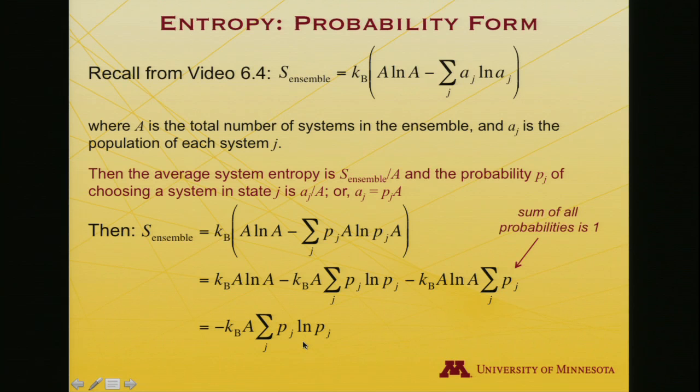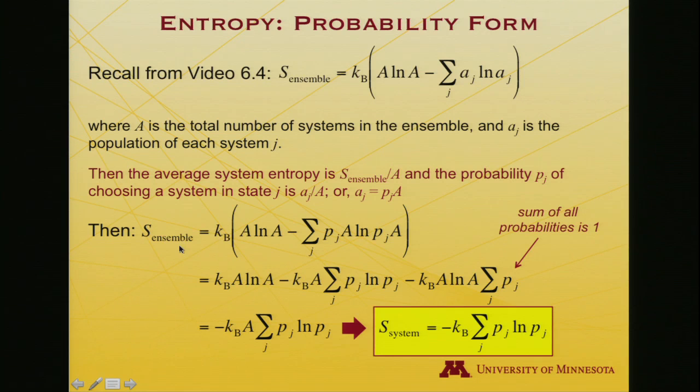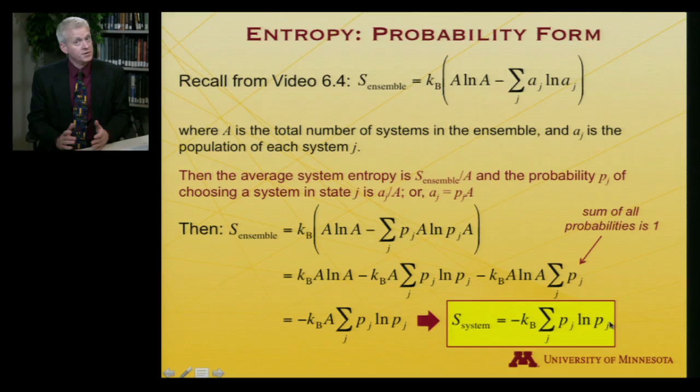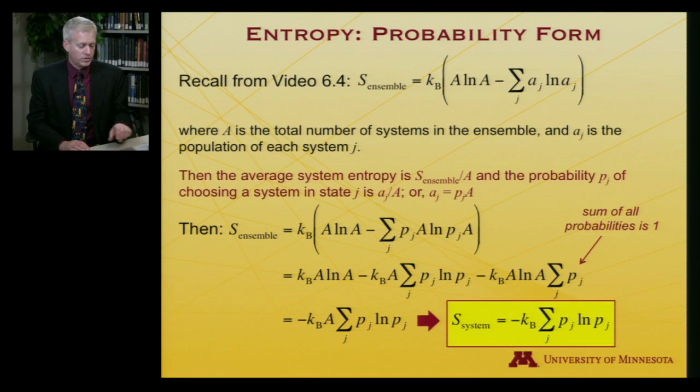And I'm left with the entropy of the ensemble is k times a, sum over j, p log p. Now, if I were to divide both sides by a, this a drops out on this term. And the entropy of the ensemble divided by the total number of systems in the ensemble, that's the average system entropy. And so the system entropy is equal to minus k sum over the individual states p log p. So this is another way to write entropy. We've seen a lot of ways to write entropy. k log w, k log omega, and here we have k p log p. This is the probability form of the entropy.